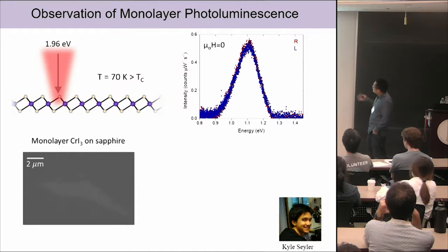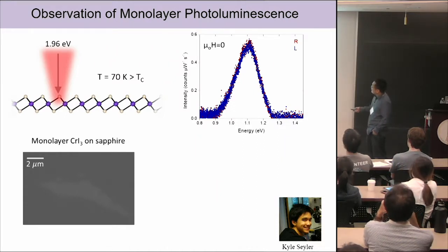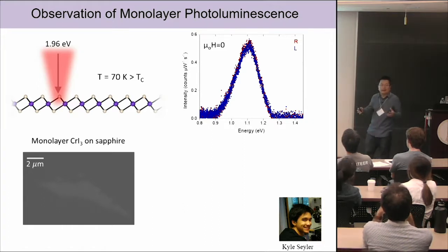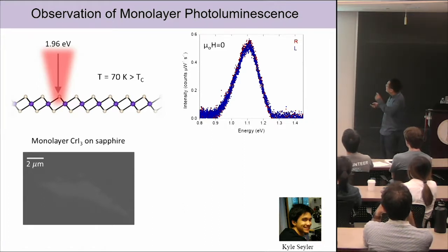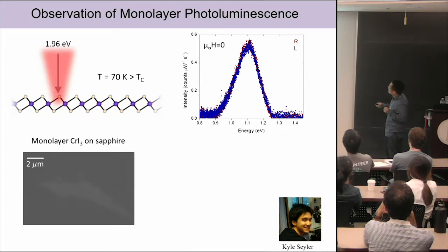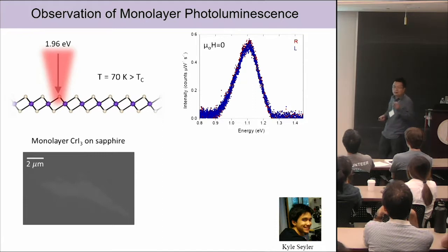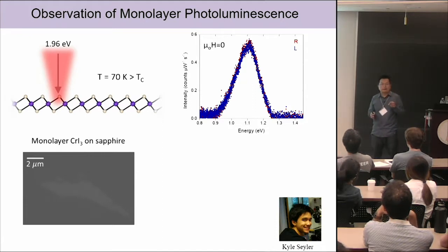Once we realized there was a real signal, we made samples on a different substrate without a gap at 1.1 eV. The intensity is extremely weak — only about 0.4 counts per microwatt per second — two to three orders of magnitude smaller than transition metal dichalcogenides. You have to be very patient when taking this data.